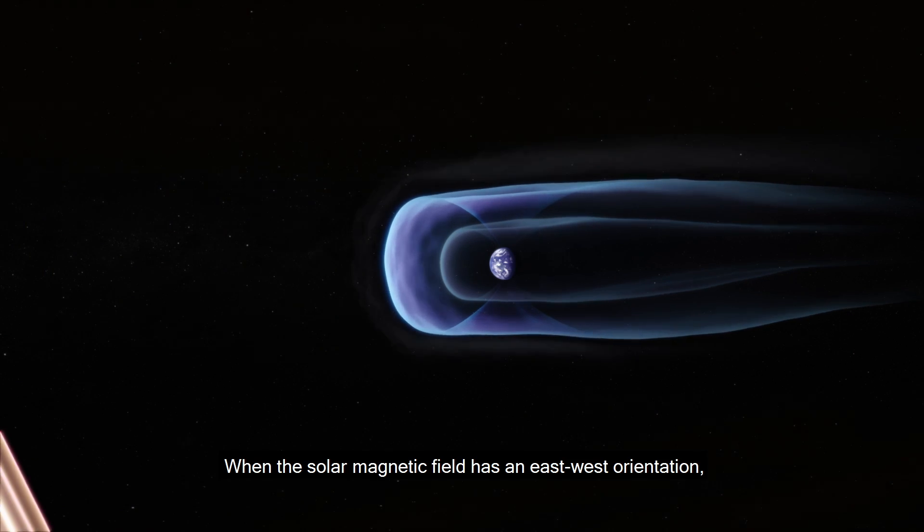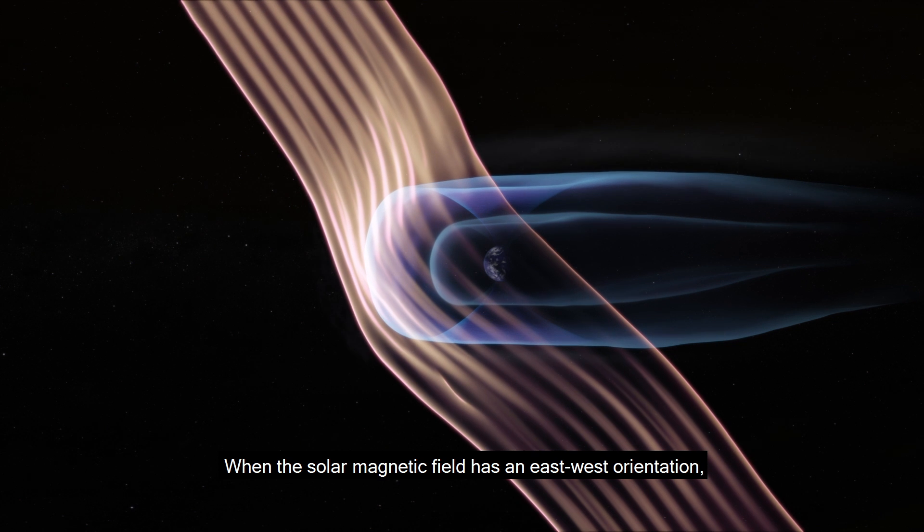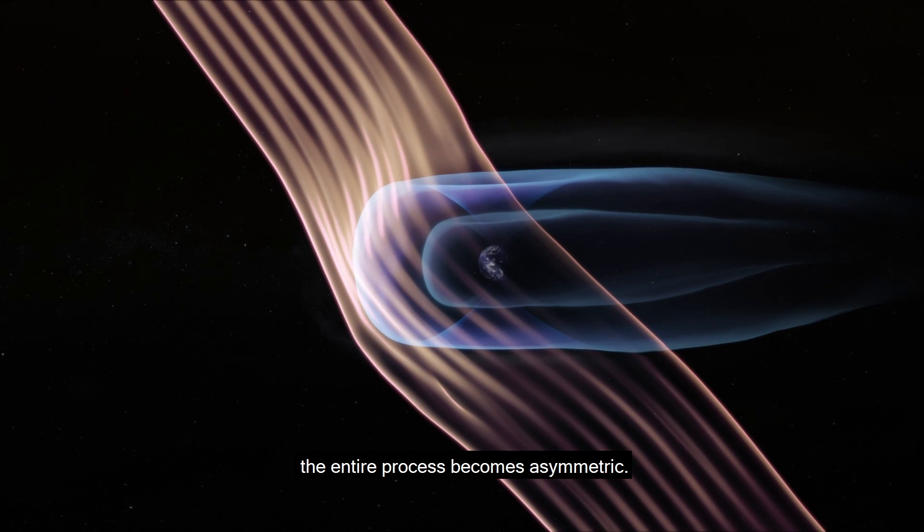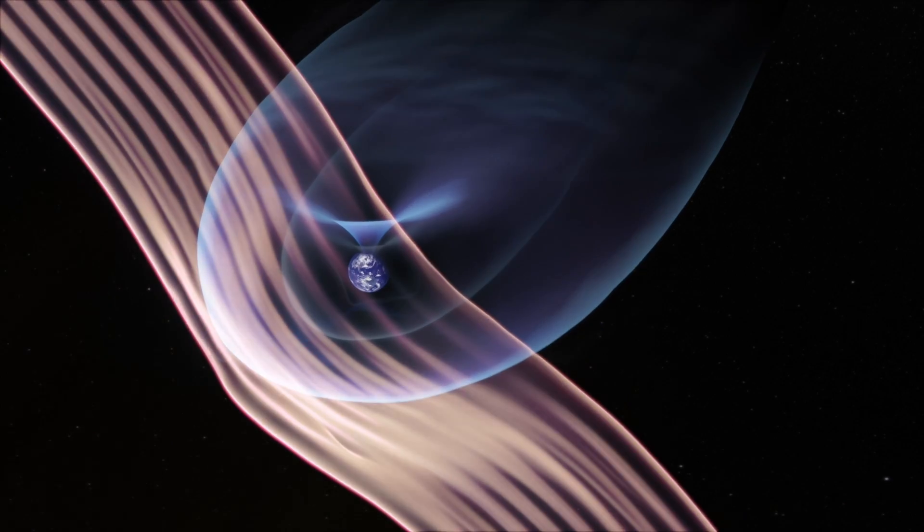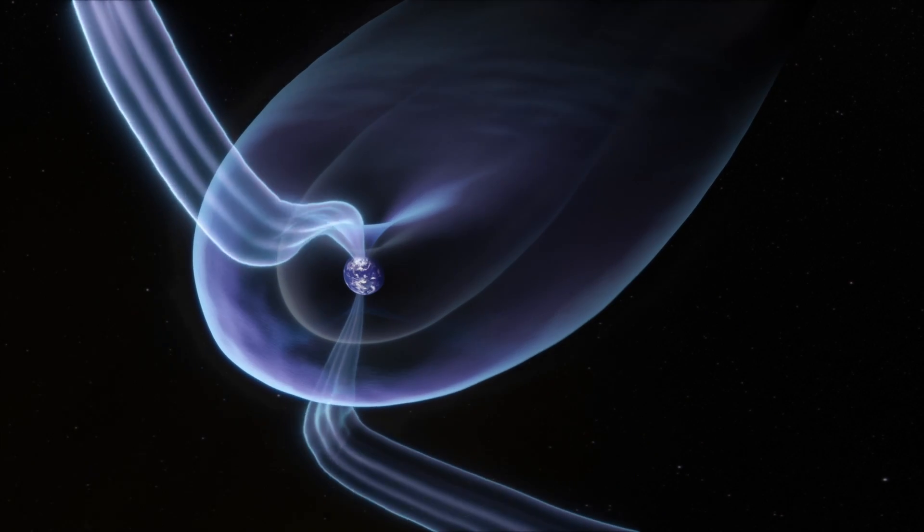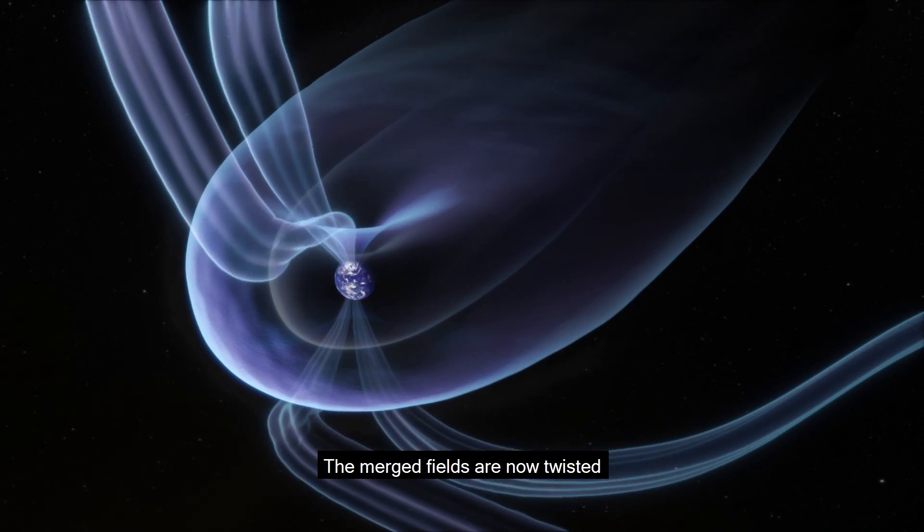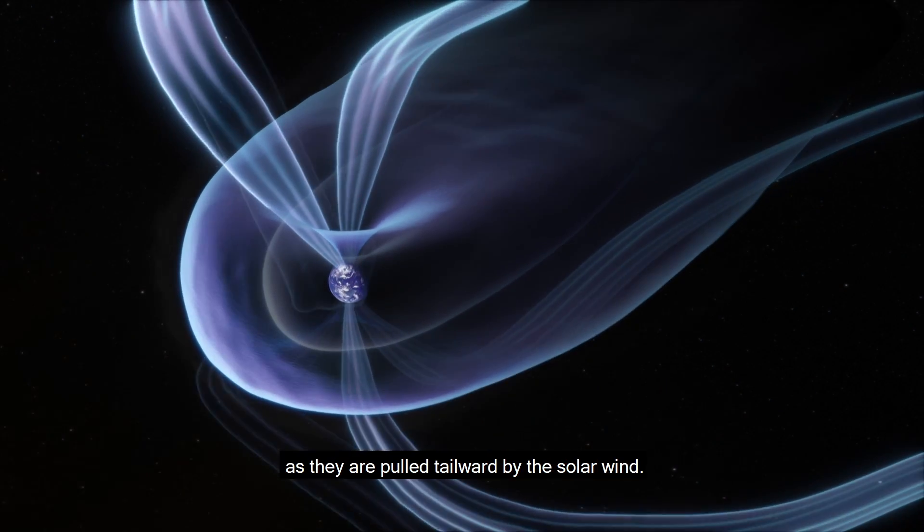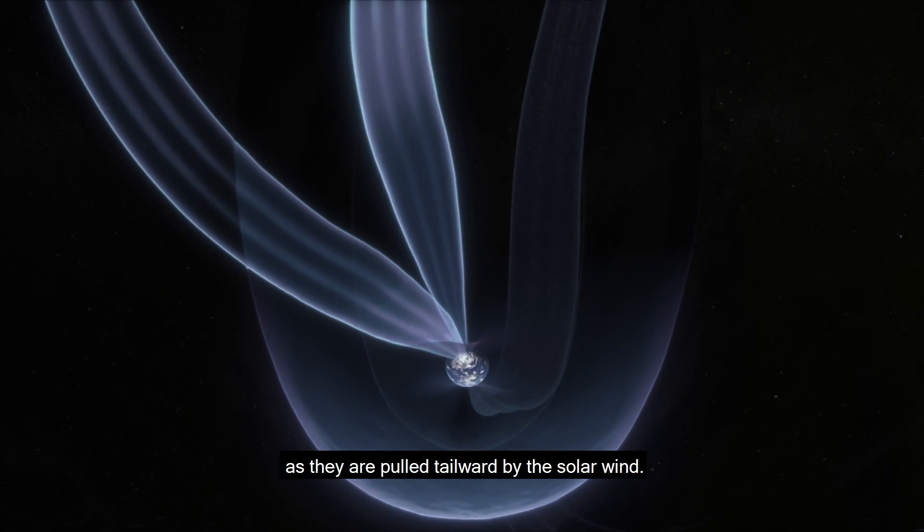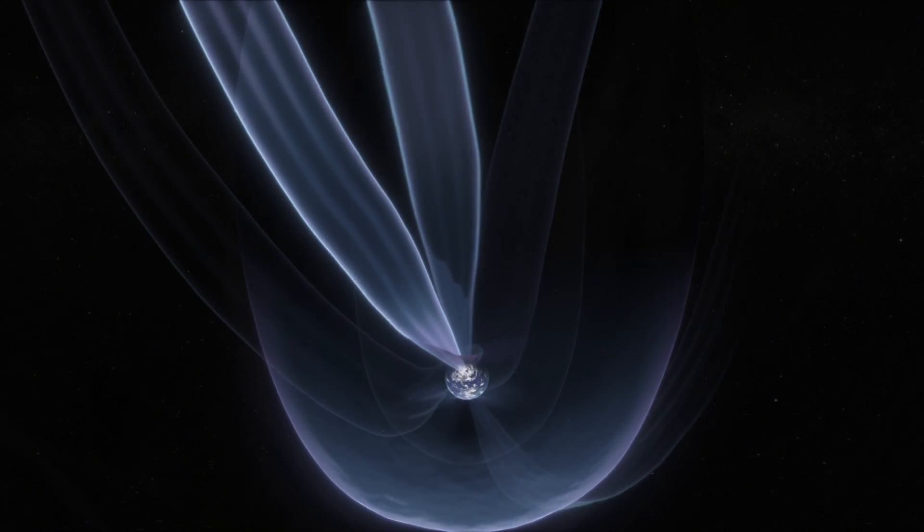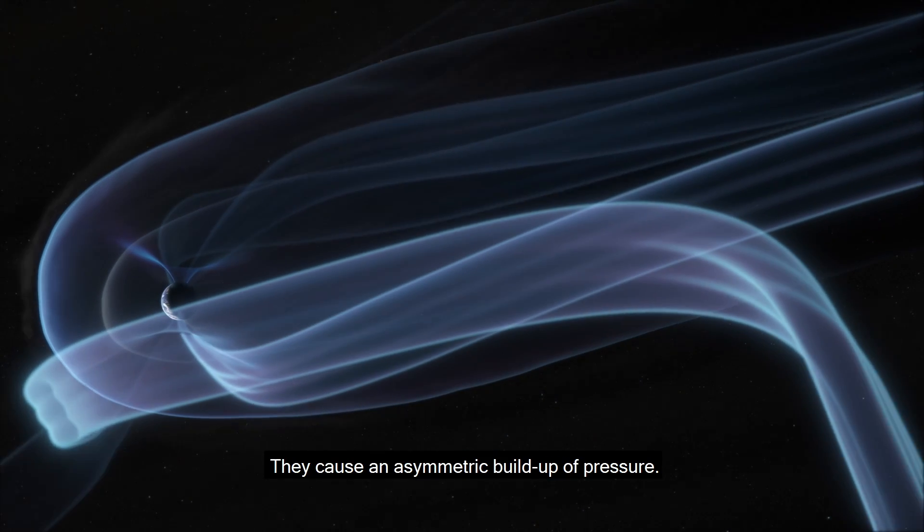When the solar magnetic field has an east-west orientation, the entire process can become asymmetric. The merged fields are now twisted as they are pulled tailward by the solar wind. They cause an asymmetric build-up of pressure.